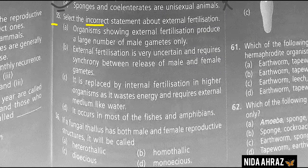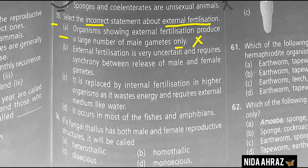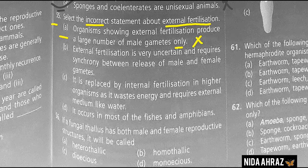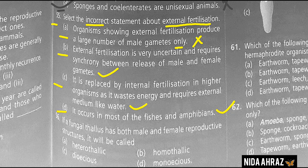The incorrect statement about external fertilization: 'organisms showing external fertilization produce a large number of male gametes only' is incorrect. Organisms exhibiting external fertilization actually produce a large number of both male and female gametes to enhance chances of fertilization — examples include algae, fish, and amphibians. External fertilization is very uncertain and requires synchrony between release of male and female gametes — correct. Option A is the incorrect statement and the correct choice.